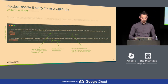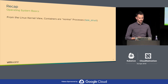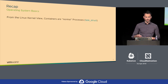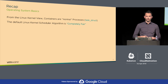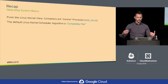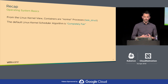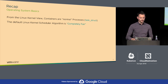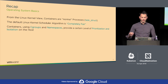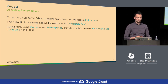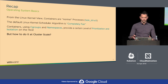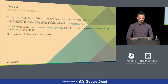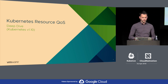To recap: from the Linux kernel's point of view, containers are just normal processes — or task structs precisely. The Linux kernel's default algorithm is completely fair, so the more task structs are running, it tries to be fair amongst them, and you can influence this by tuning shares. Containers use cgroups and namespaces for prioritization and isolation on the host, though for cgroups there's not always isolation, as we saw with BusyBox. The biggest question then is: how do we do this at cluster scale? This is where Kubernetes quality of service comes into the picture.